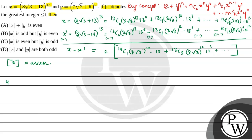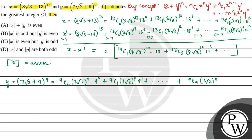Now consider y = (7√2 + 9)^9. Expanding this gives: C(9,0)·(7√2)^9·9^0 + C(9,1)·(7√2)^8·9^1 + ... + C(9,9)·(7√2)^0·9^9.